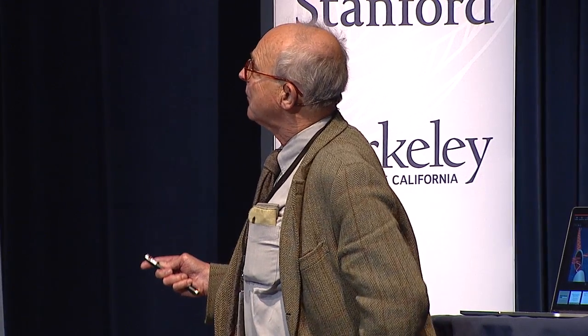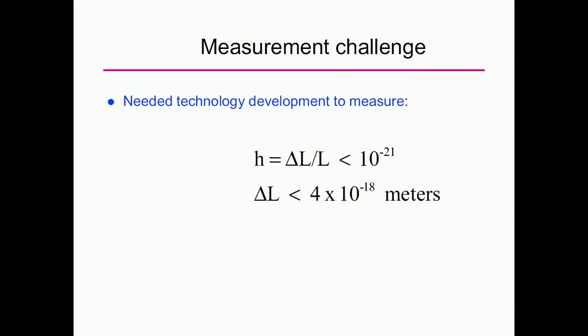What makes it hard isn't the concepts — those are straightforward. What makes it hard is the problem that, as Kip Thorne will tell you, if a gravitational wave from somewhere in the universe reaches us, you're going to have to do this extremely well. You have to measure a strain H — that's Delta L over L — you have to do better than 10 to the minus 21.